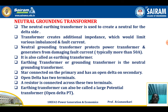The neutral grounding transformer is used to create a neutral for the delta side. The transformer creates additional impedance which limits various imbalanced and fault currents. It protects power transformers and generators from damaging fault currents, typically more than 50 amps. It is also called an earthing transformer.